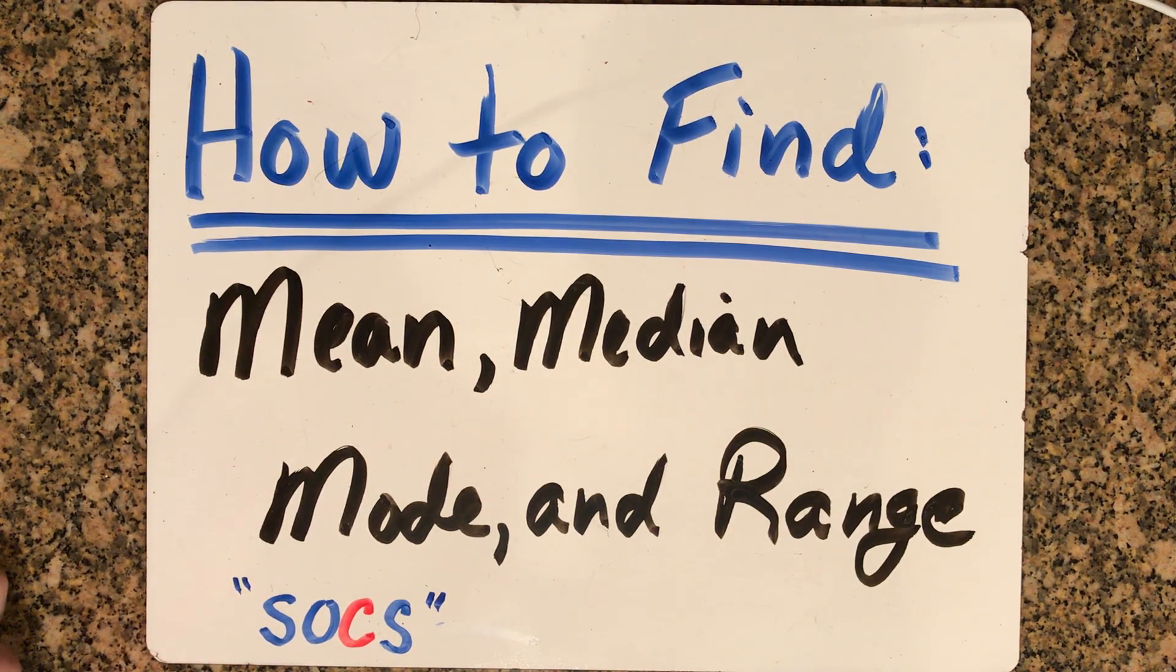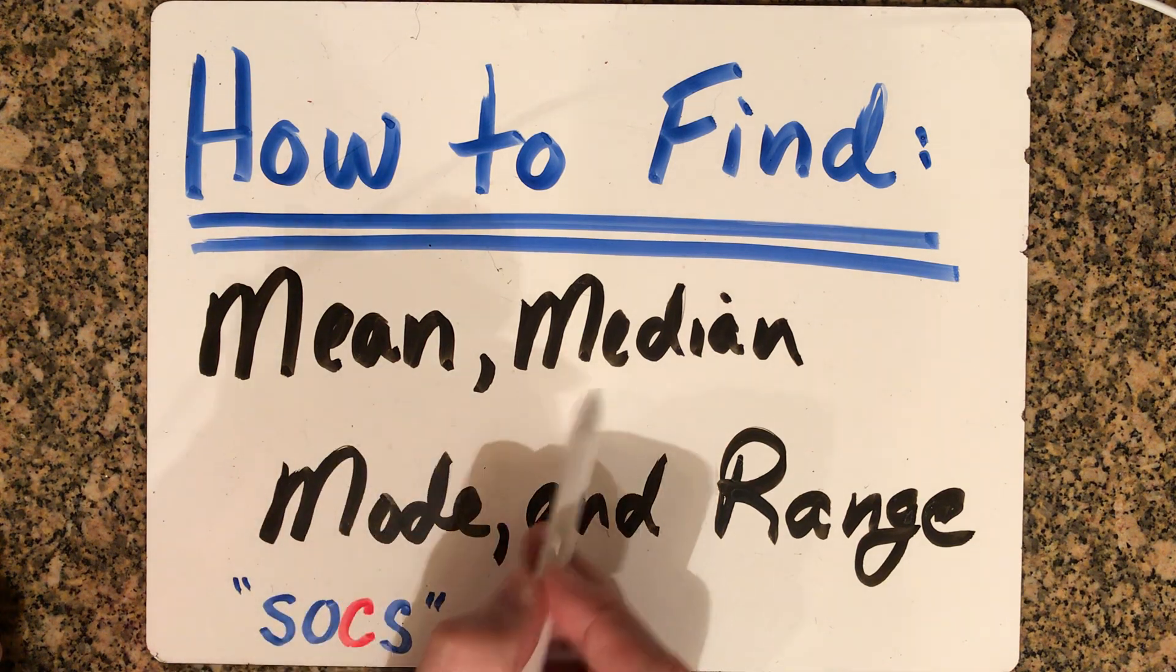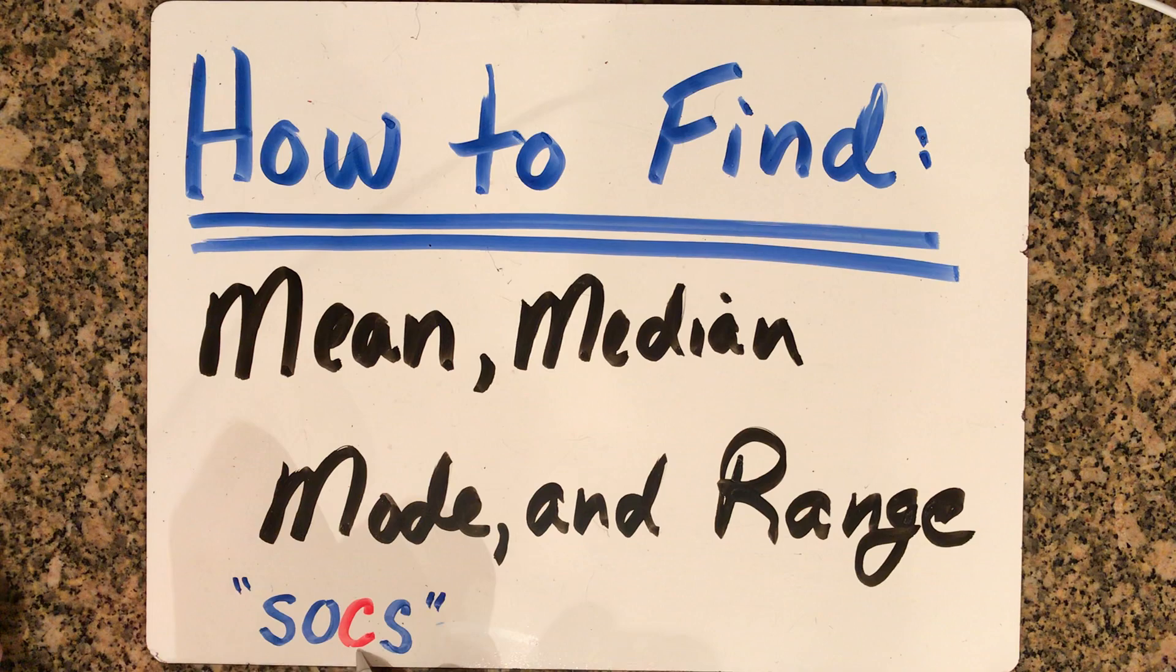This video will walk you through how to find mean, median, mode, and range of data. If you recall when we learned about SOCS of our data graphs, we wanted to figure out what the center is. That's what the C stands for. These three words help you determine what that C or center is of our data, either as a graph or as a list of data.